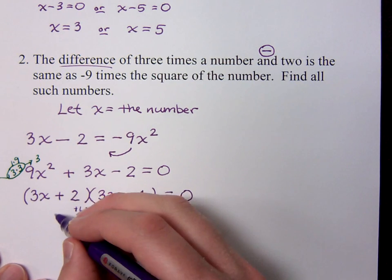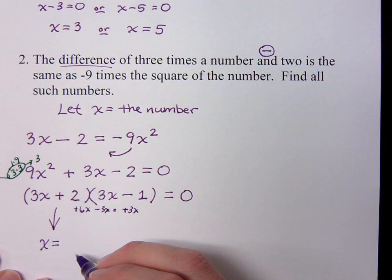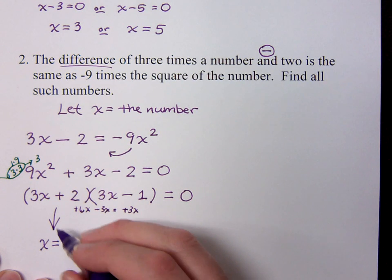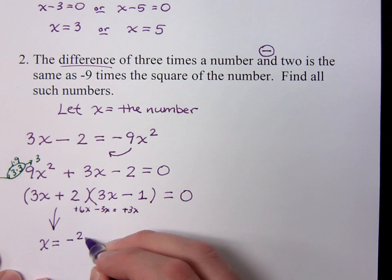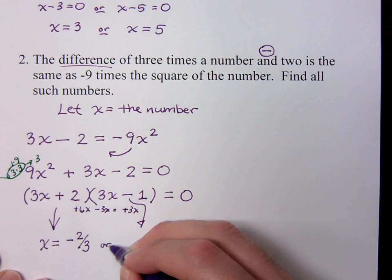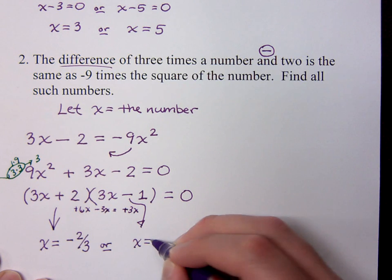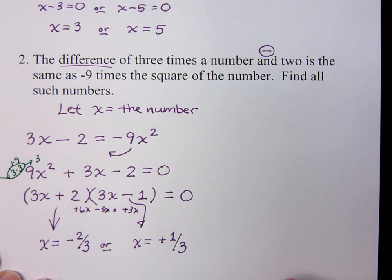Now, from the factor of 3x plus 2, we find out that x equals what? If I want to solve this guy, I would have to first subtract the 2 and divide by 3. If I want to solve this guy, I would first have to add 1 and divide by 3, right? So these are my two solutions.